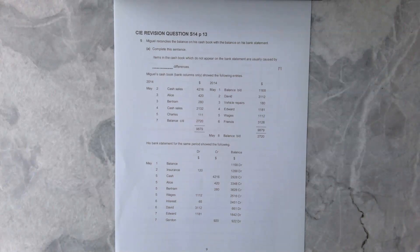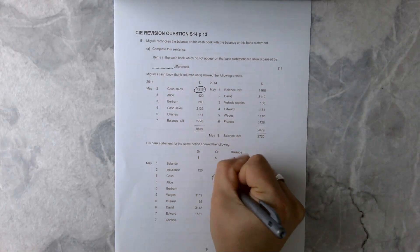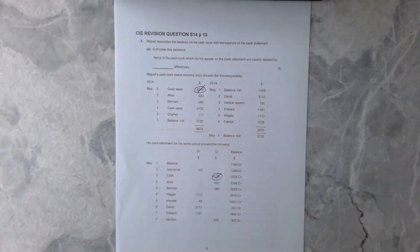I'm going to start with the debit side of the cash book because that is easier to do. We're going to look at our cash sales, we see it there, we see it there, let's tick it off, that's in both books.